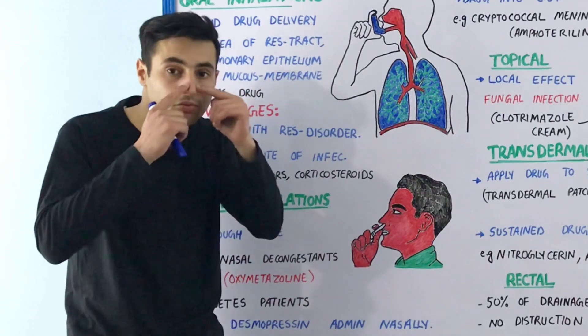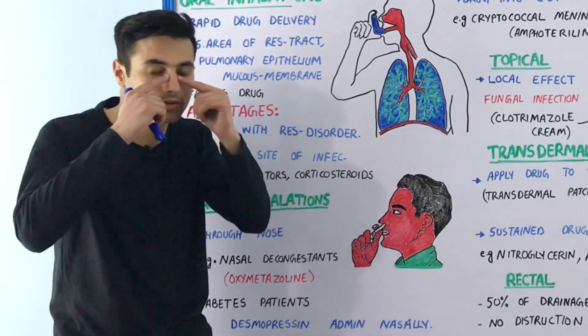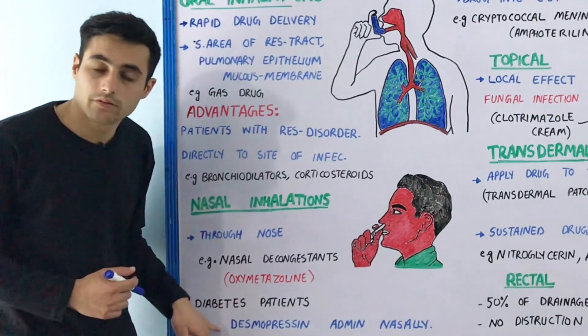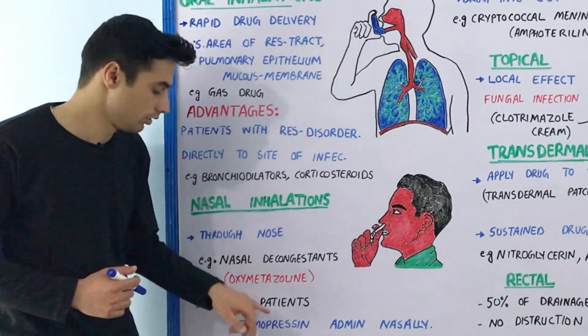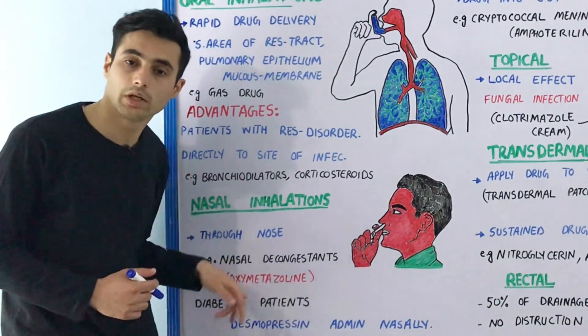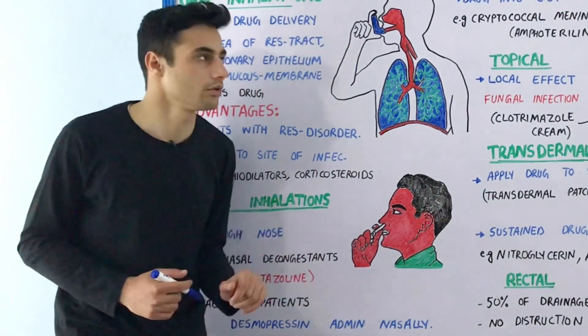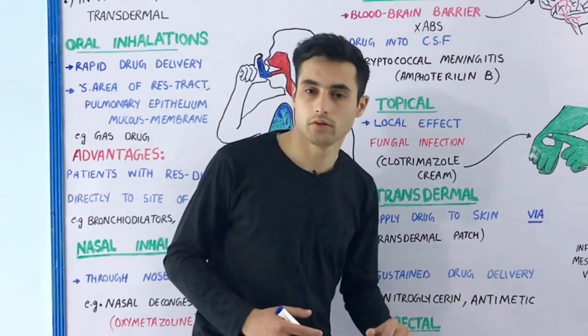This drug is taken through the nasal route and opens up nasal congestions. A very famous and interesting example is desmopressin medication, which is administered through the nasal route for diabetes patients.